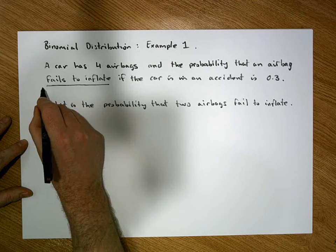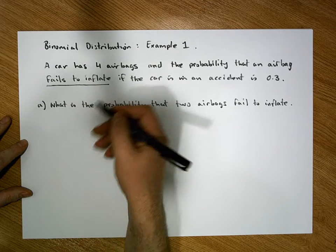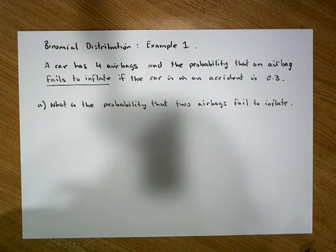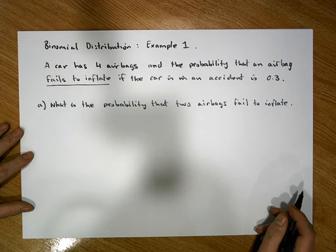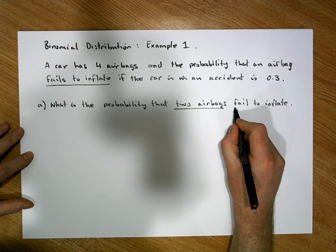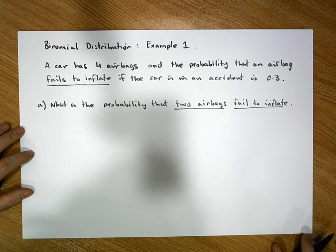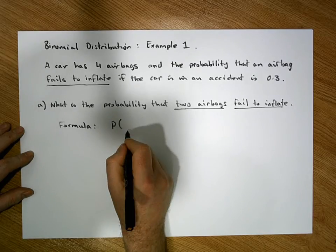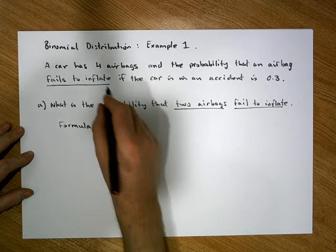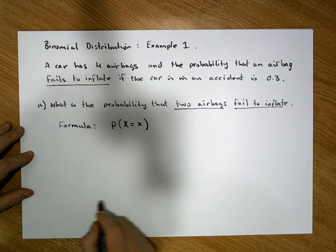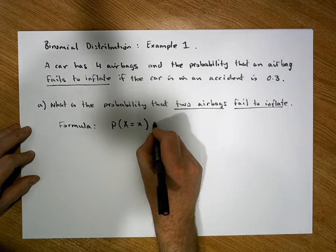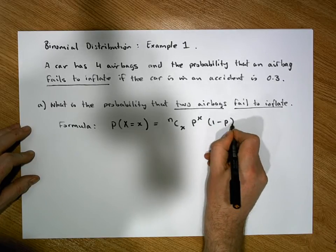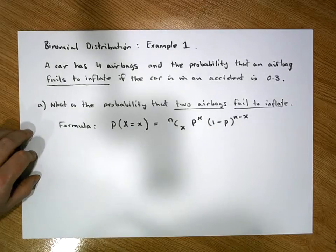The context of the question is framed in terms of failing to inflate. What is the probability that two airbags out of four fail to inflate? The binomial formula states: P(X = x) = nCx × p^x × (1 − p)^(n − x).